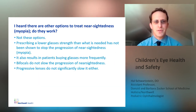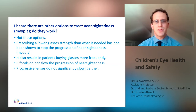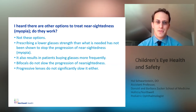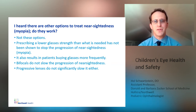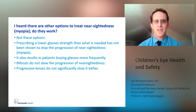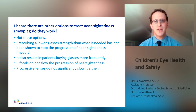The next few options do not work. Prescribing a lower glasses strength than what is needed has not been shown to stop the progression of nearsightedness — it also results in patients buying glasses more frequently. Bifocals have been looked at, but bifocals do not slow the progression of nearsightedness. Progressive lenses are like bifocals without a line, and these do not significantly slow the progression of nearsightedness either.